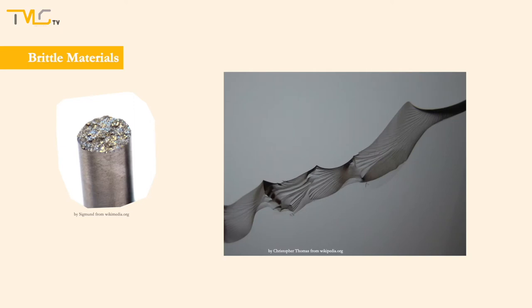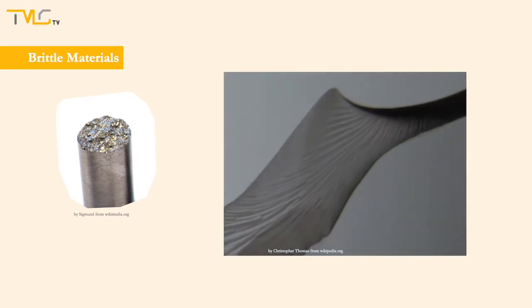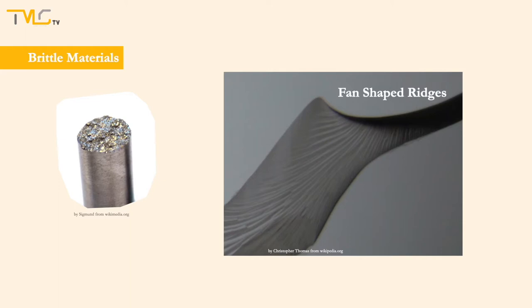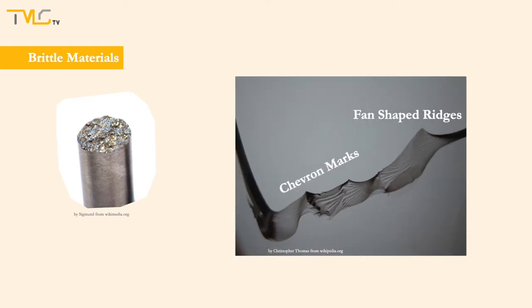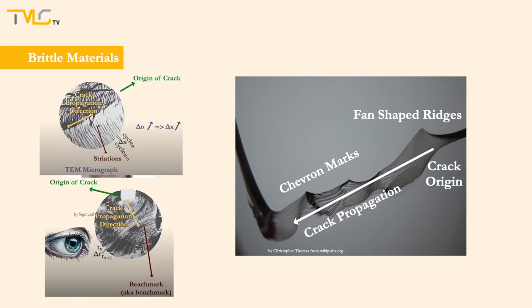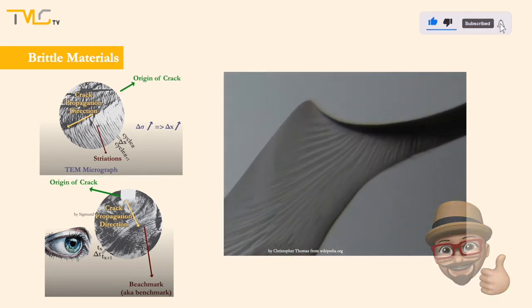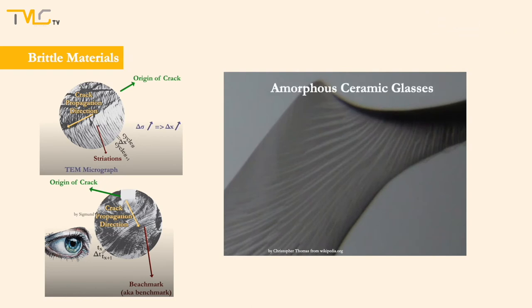However, features called chevron marks and fan-shaped ridges can be seen at the fracture surface of brittle materials. These features usually point at the origin of the crack, like beach mark and striation mechanisms covered for fatigue deformation in video number 2.5. These features may even be visible to the naked eye for some materials, enabling rapid identification of the fracture characteristics of the specimen. Furthermore, some brittle materials have shiny and smooth fracture surfaces.